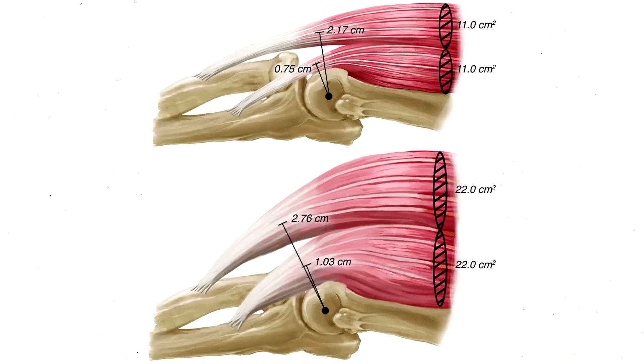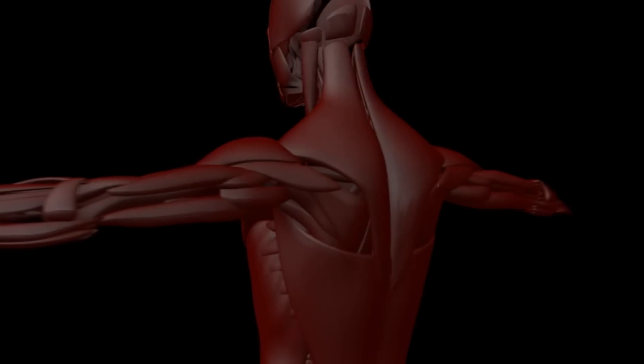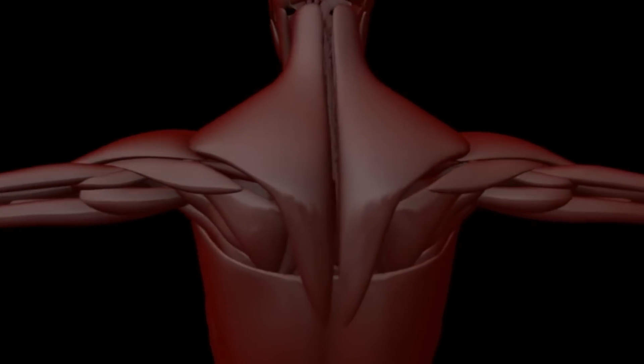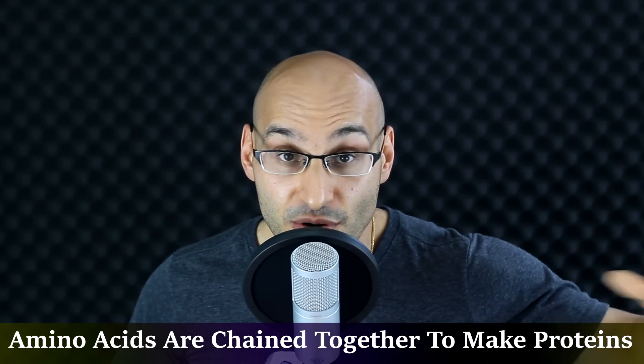Muscle hypertrophy is an increase in the size of muscle fibers. This is an anabolic process — the building up of muscle tissue. Hypertrophy occurs when the rate of protein synthesis exceeds the rate of protein breakdown. Protein synthesis is the creation of new proteins within the body, aided by the food we eat. When we consume protein sources, these are broken down and the amino acids are built up and chained together to make new proteins.